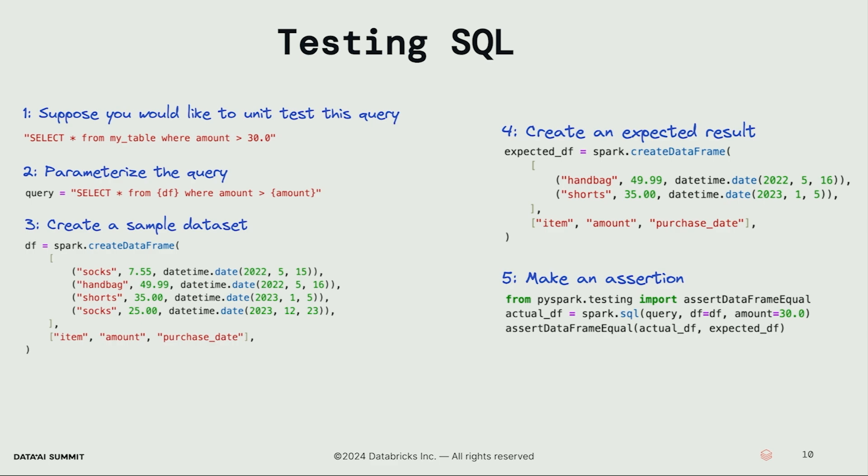Let's create a sample dataset with three columns: item, amount, and purchase date — so we have socks, $7.55, handbag, $49.99, and so forth. When we run this unit test, we supply an amount argument greater than 30, setting amount to 30. So the only two rows that should be returned after invoking this query with amount of 30 should be handbag for $49.99 and shorts for $35. This is intentionally a trivial example just to show the functionality, but you can do this for very complicated SQL as well.